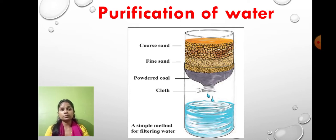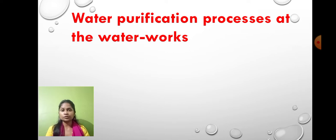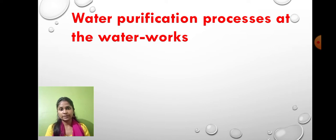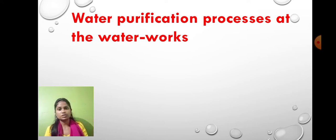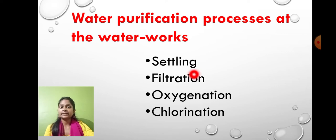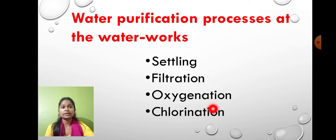We need to use water purification methods at a larger level. At the waterworks, there are basically four ways of water purification conducted at a commercial level: settling, filtration, oxygenation, and chlorination. Let's look at each one by one.